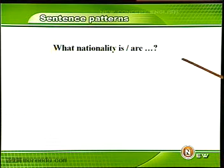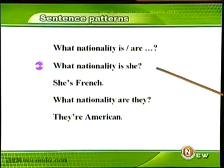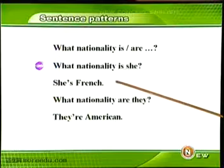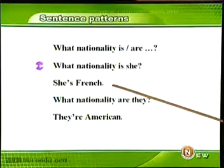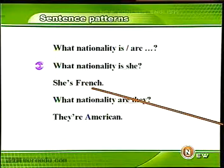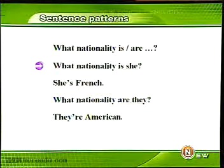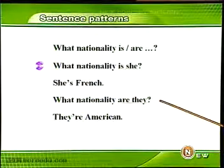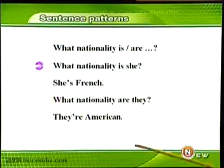我们来复习一下前面学到过的如何来询问别人的国籍：What nationality is/are...? 来看例句：What nationality is she? She's French. 她是哪国人？她是法国人。请注意，She is French，French在这儿是形容词，它的前面没有任何的冠词。What nationality are they? 他们是哪国人？They are American. 他们是美国人。